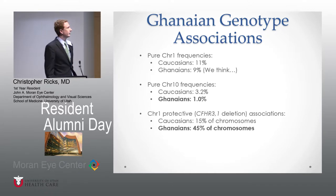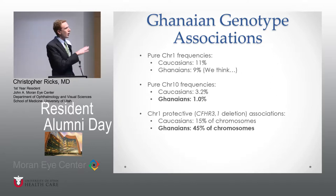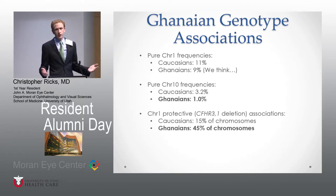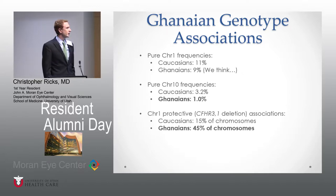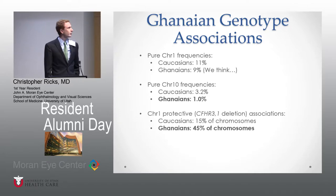So why Ghana? A couple of reasons. We have one of the doctors we worked with who is from Ghana originally — he's now in the UK, and he was able to set up a lot of the connections for us. But really it comes down to the genetics. In chromosome 1 frequency, we see it in about 11% of Caucasians and about 9% of Ghanaians. Whereas chromosome 10 is seen in only about 1% of the Ghanaian population. Almost 45% of all chromosomes studied in the Ghanaian population have these protective alleles, making AMD very rare in the West African and probably the broader African population.